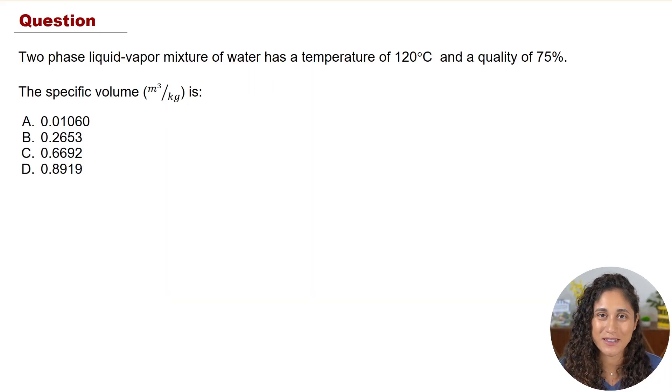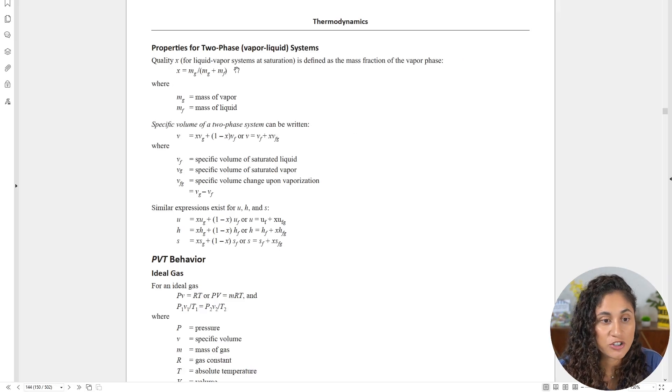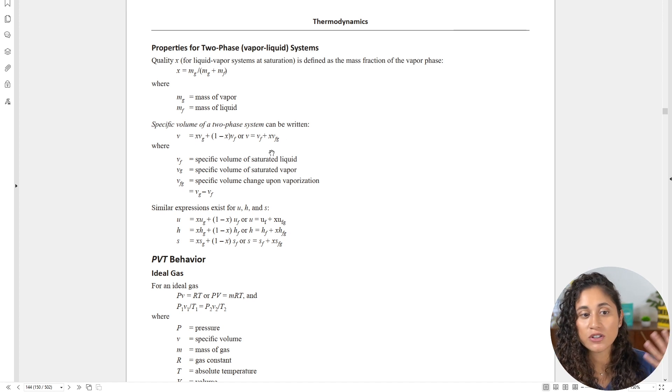Okay guys, as we mentioned before we have a two-phase system here, so the first thing we've got to do is go to the reference manual and grab the equation. Here under the thermodynamics section you guys are given the two-phase system equation for a specific volume. This is the equation we're going to use.